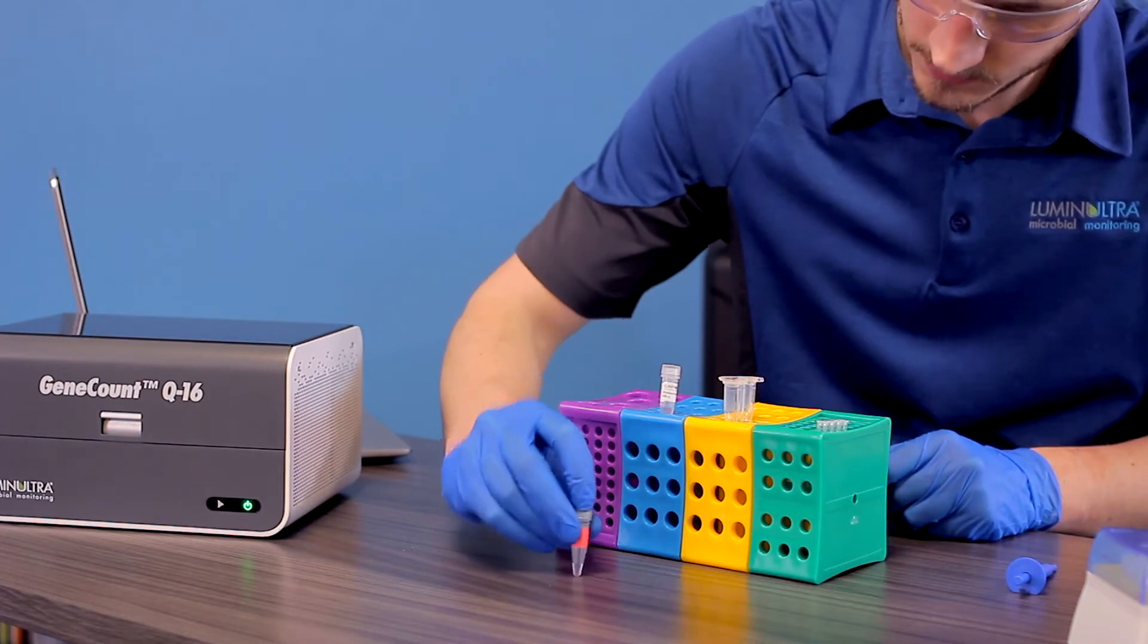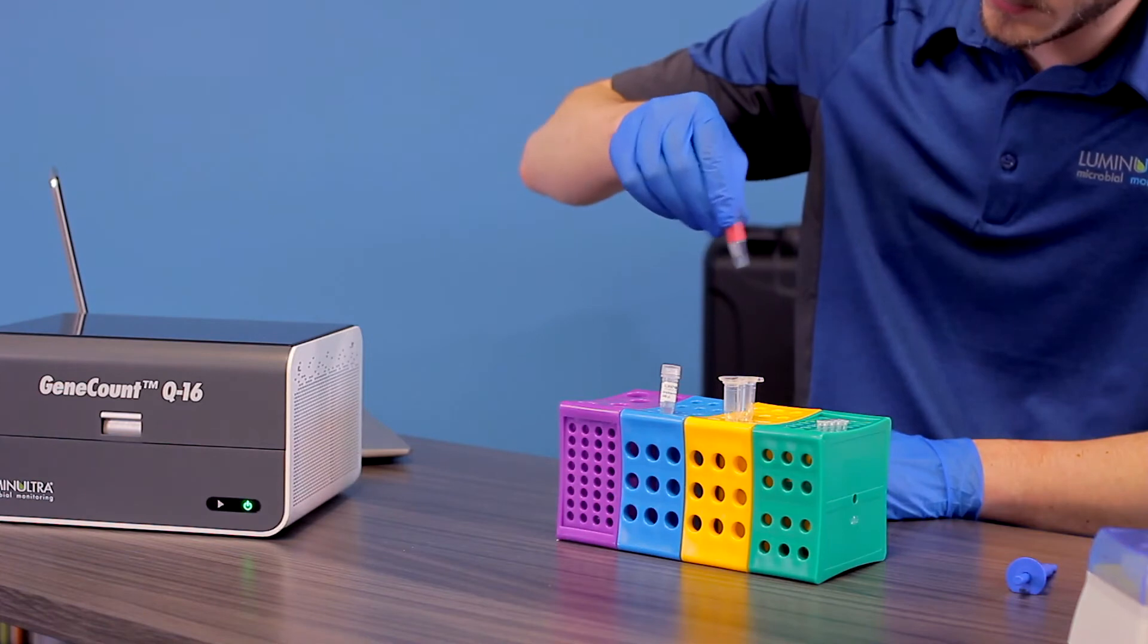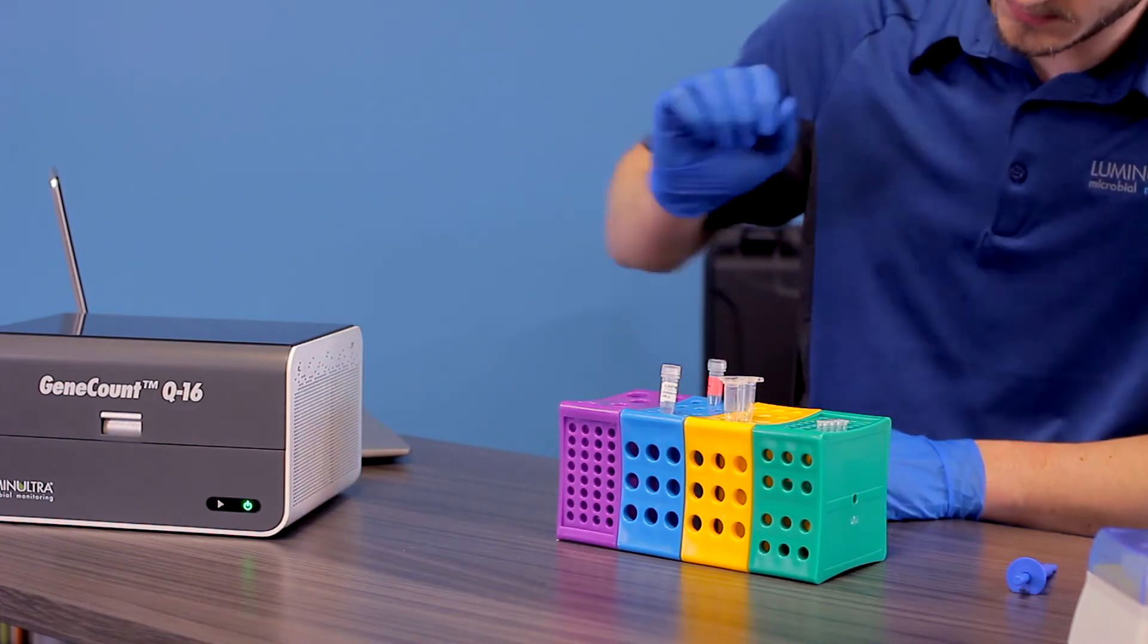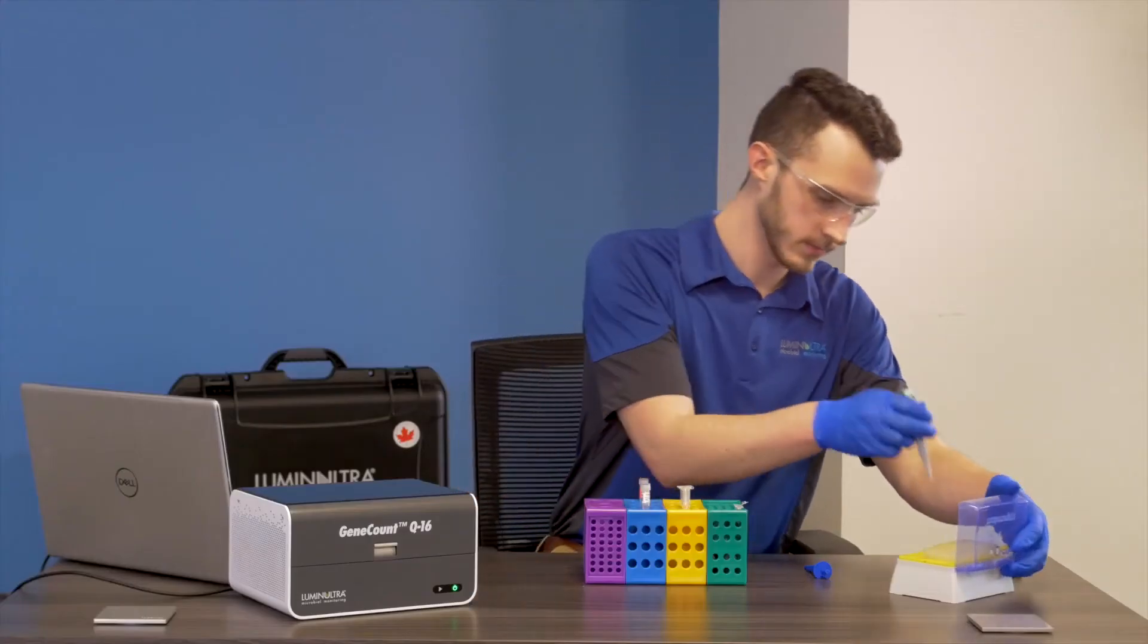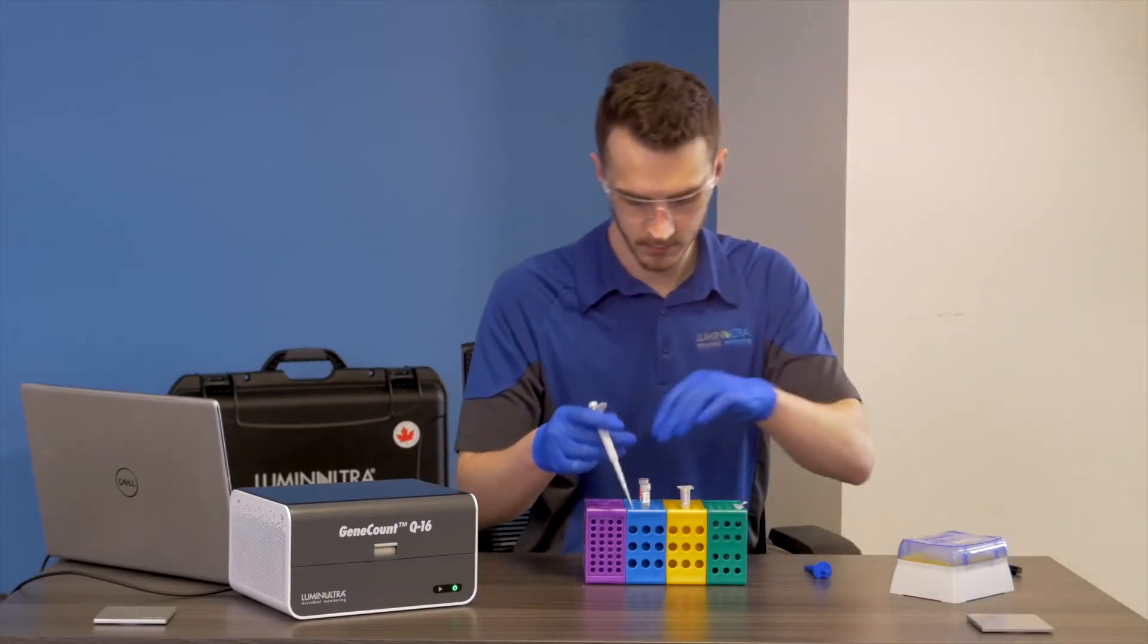While the rehydrated positive controlled DNA tube is incubating on the bench, you can use this time to begin setting up the assays as outlined in the next few steps. Dispense the rehydrated reagents and the samples into the appropriate assay tube, working from left to right.